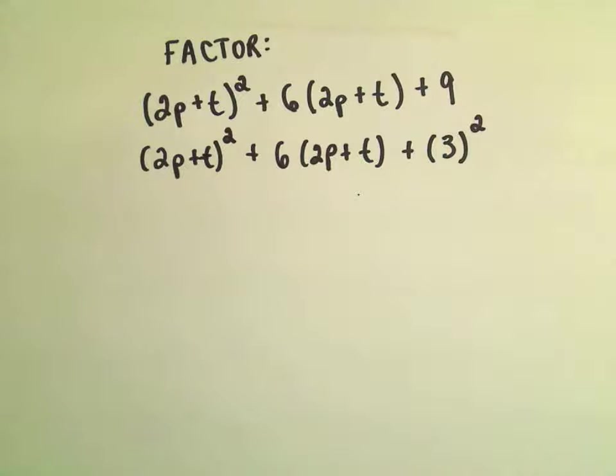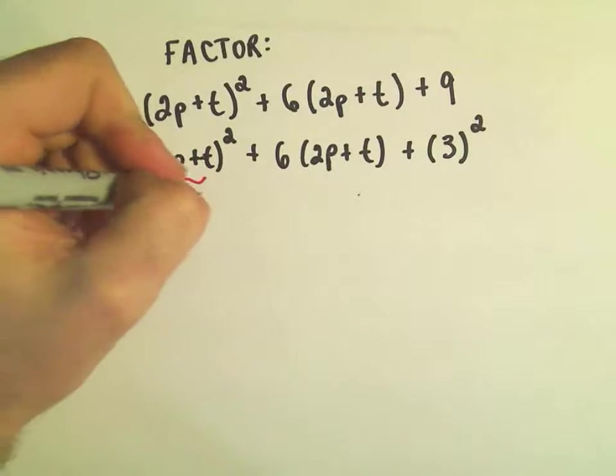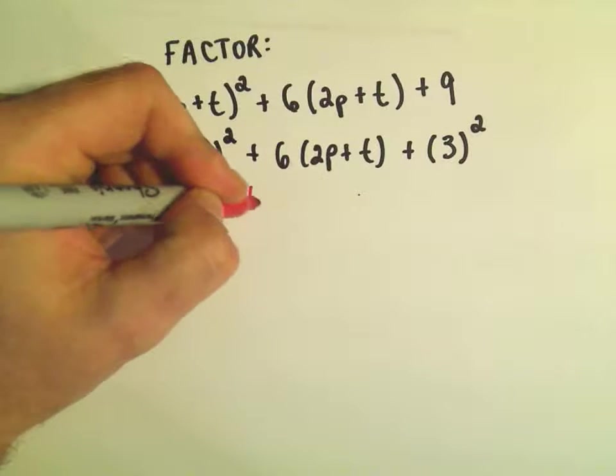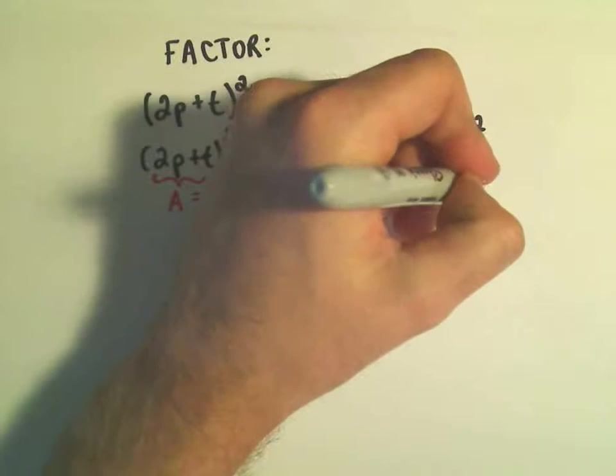And it says in this formula, this would be our a value, so a would equal 2p plus t, that's what's being squared. b would have the value of 3.